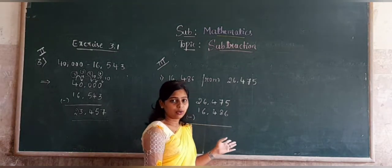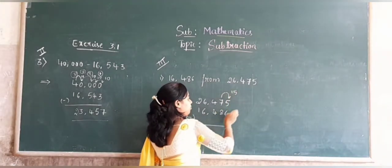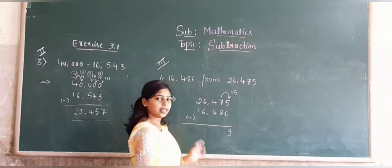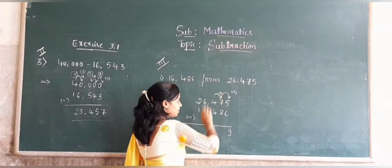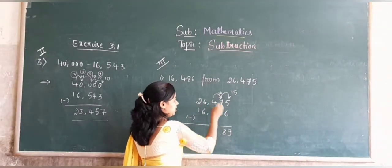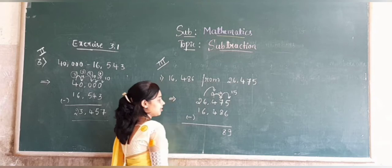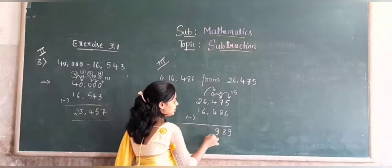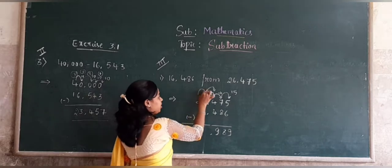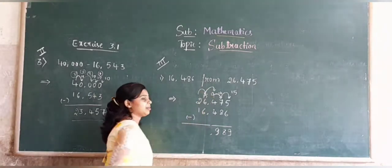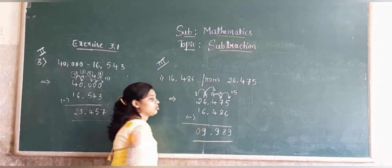Is this possible to subtract? No. Take the borrow from the previous number. The 5 becomes 15; 15 minus 6 is 9. Here the number becomes 16; but is it possible to subtract? No. Take the borrow; it becomes 16; 16 minus 8 is 8. The remaining number is 3; take borrow, it becomes 30 minus 4, remaining is 9. Here it becomes 15; 15 minus 6 is 9. The remaining number is 1; 1 minus 1 is 0. We get 9,918.